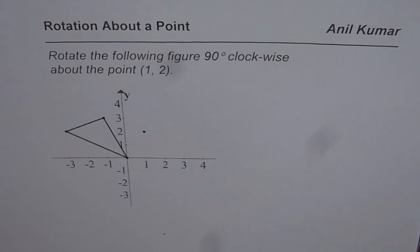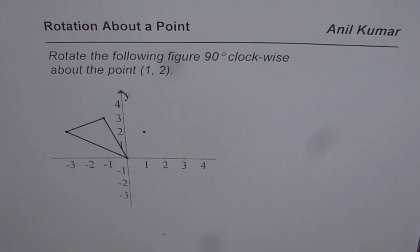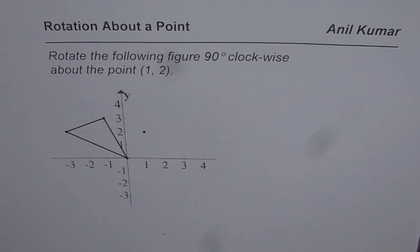I'm Anil Kumar and this video is for my subscribers. There are very few videos discussing rotation about a point which is external to the object. The question here is: rotate the following figure 90 degrees clockwise about the point (1, 2). We are given the figure, so let us see how to do it. This will also help you understand the process slightly better.